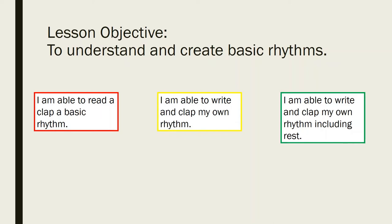At a basic level, you should be able to clap a basic rhythm. At a better level — the yellow box in the middle — you are able to write and clap your own rhythm of your choice. And then at the top end of the scale, in the green box on the right, you are able to write and clap your own rhythm including adding rests.